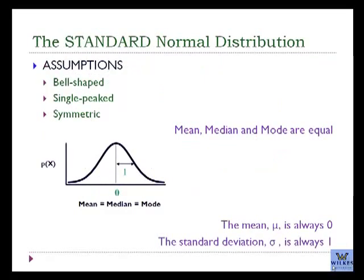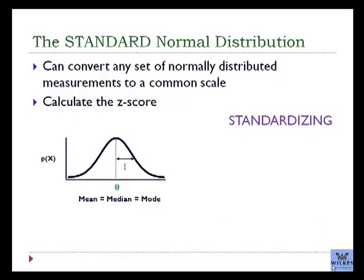The standard normal distribution is bell-shaped, single-peaked, and symmetric. The mean, the median, and the mode are still equal — this time they're all 0, and the standard deviation is 1. These two properties make it the standard normal distribution. You can convert any set of normally distributed measurements to a common scale by calculating the Z-score. This process is called standardizing.